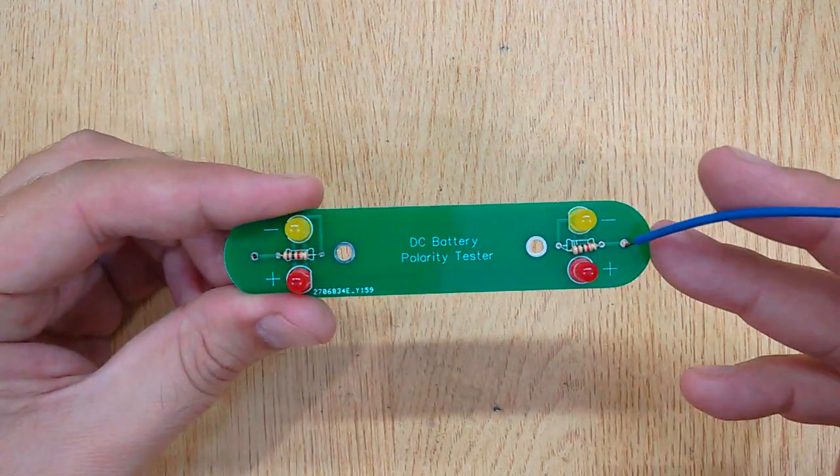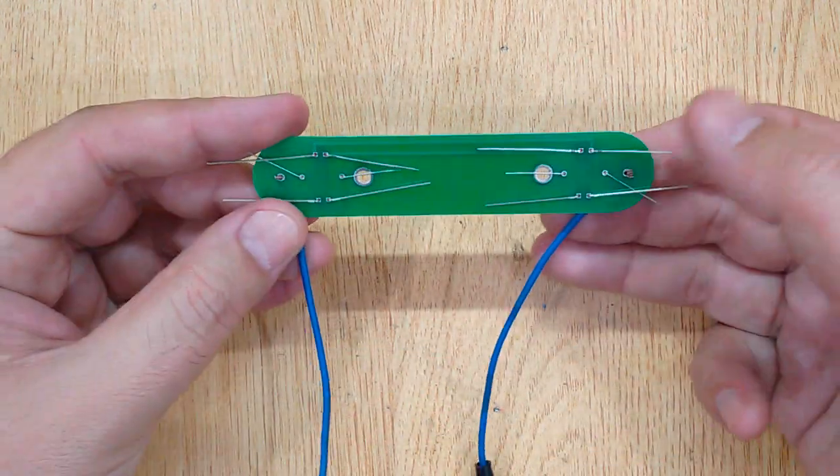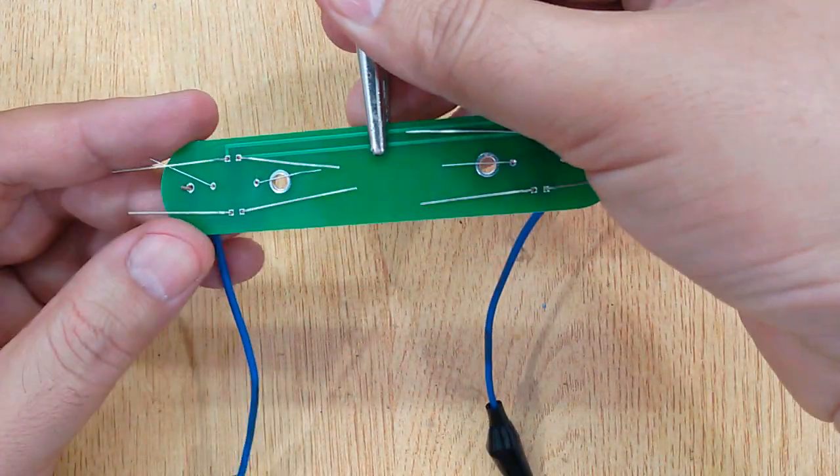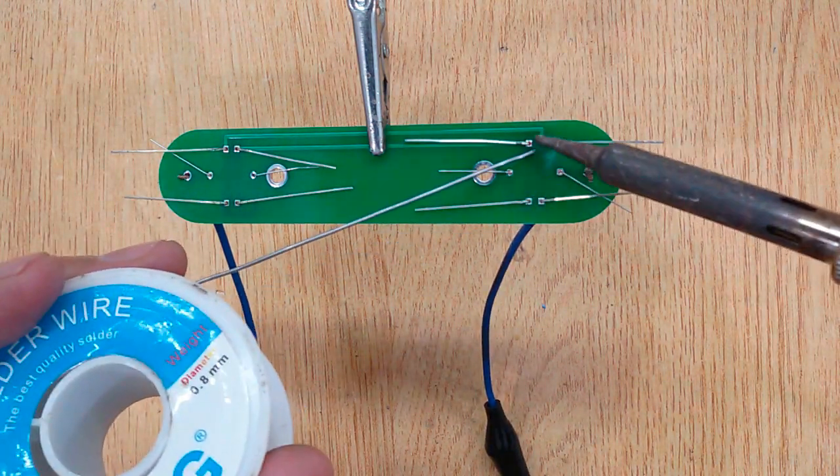After that, insert two wires with alligator clips into the PCB. And solder all of them using solder wire and solder iron.